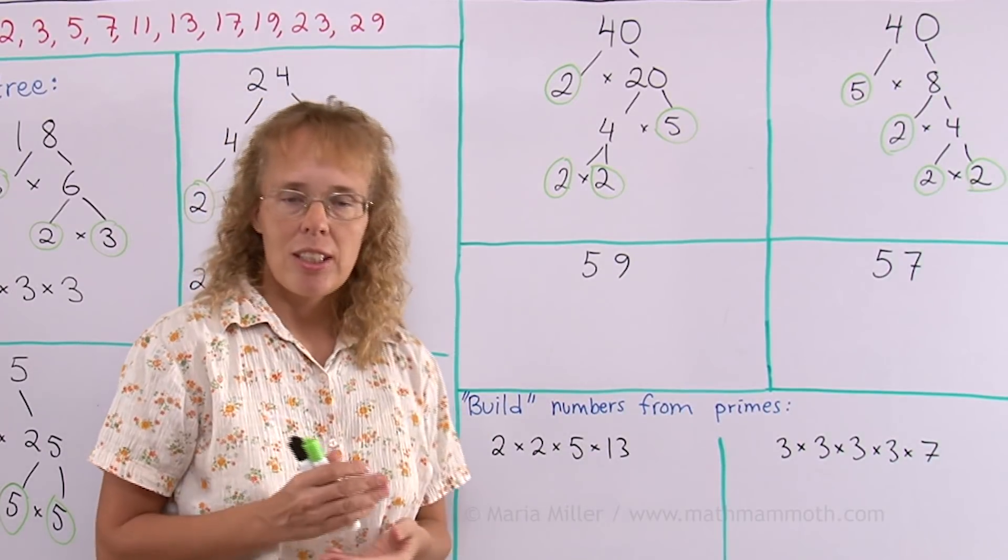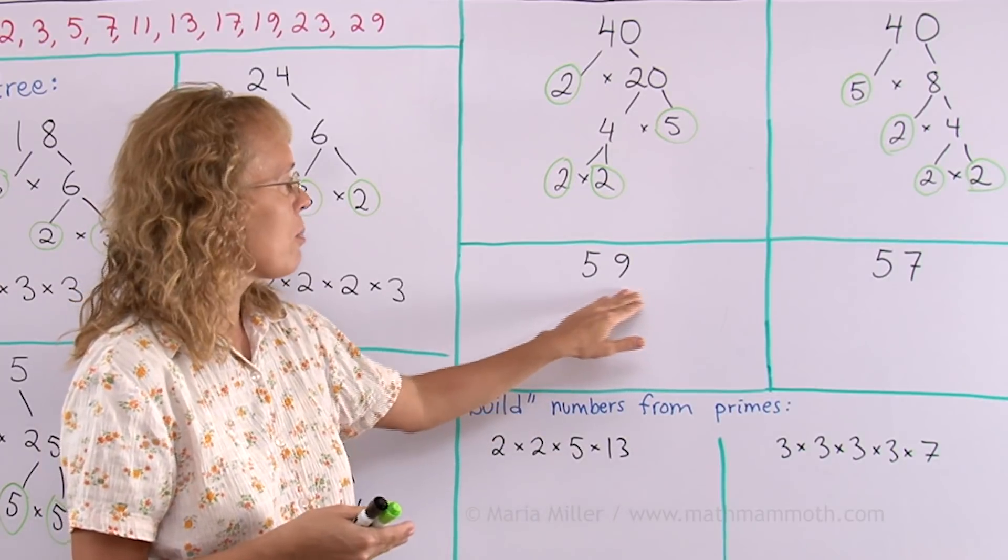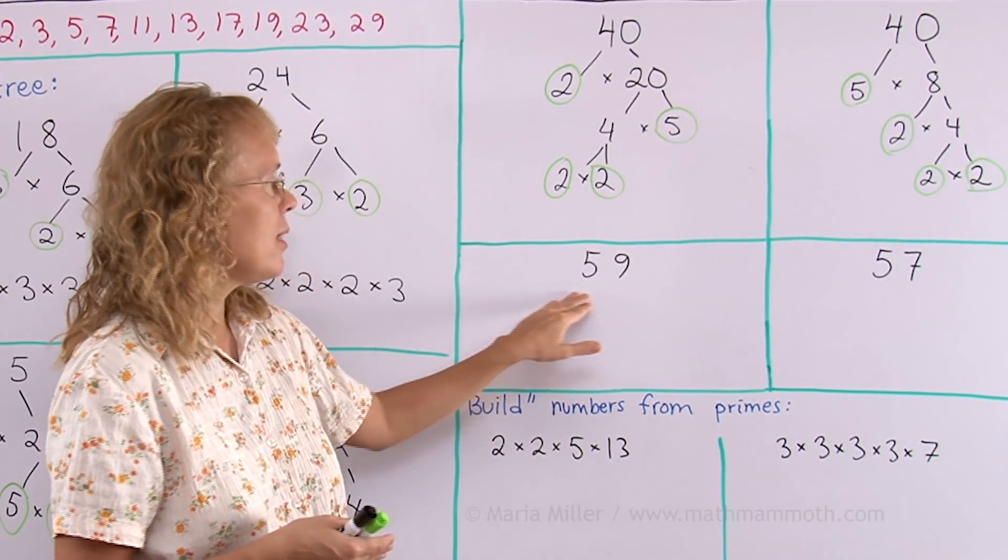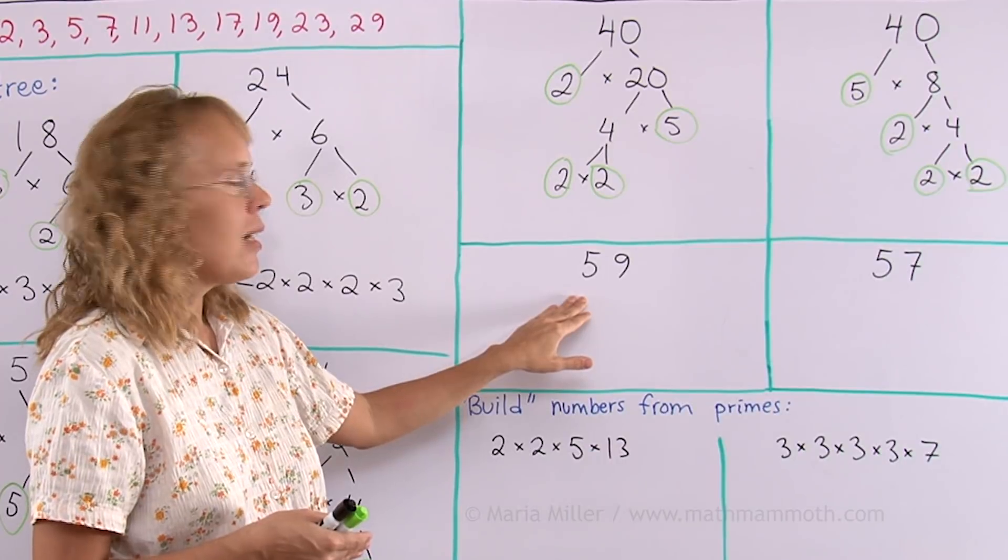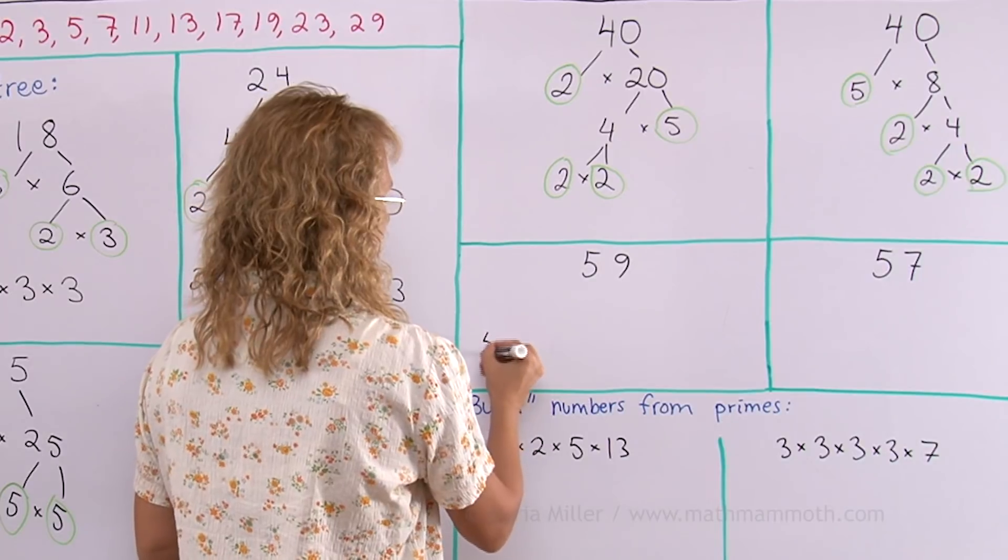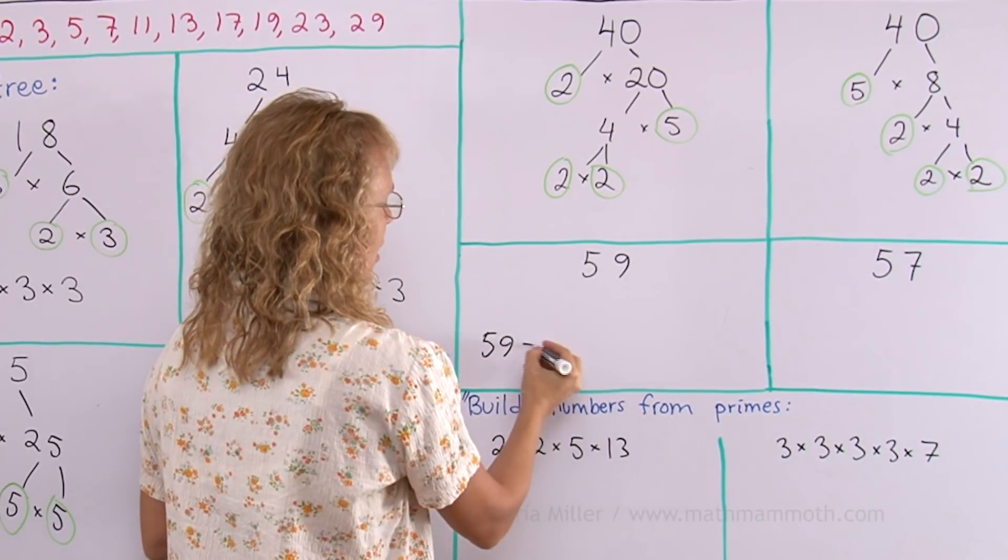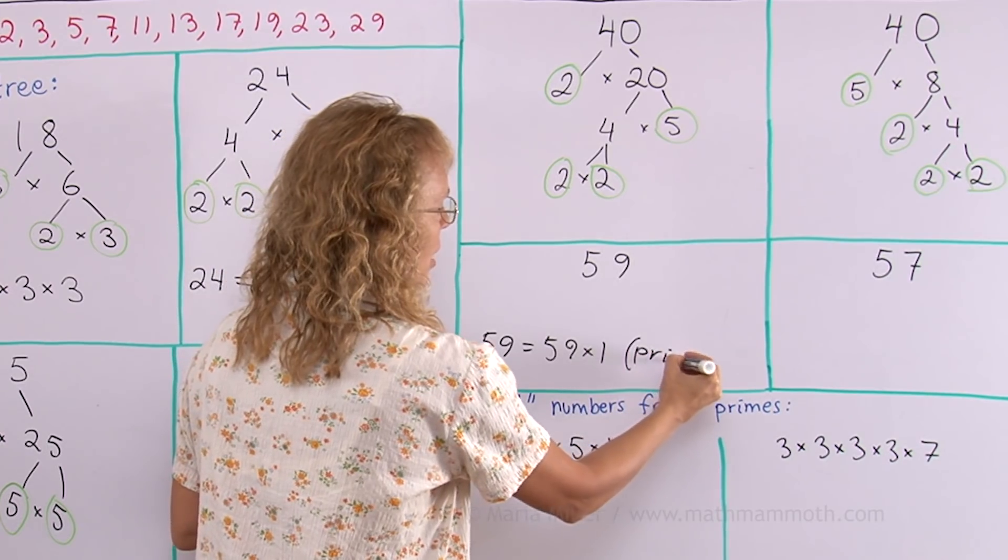How about by 7? Well, the multiplication table of 7 has 56 and then 63. No, not by 7. By 9? Neither. It is a prime. So basically, it doesn't produce any factor tree. It is just 59 times 1, or you can put here that it is a prime number.